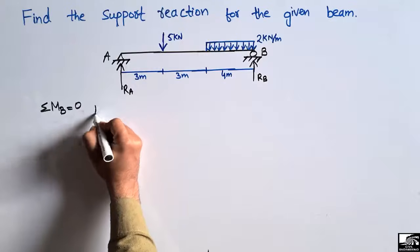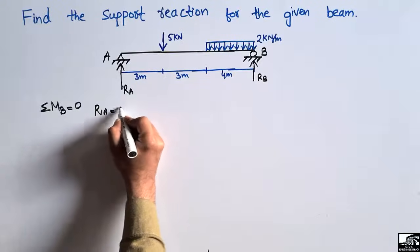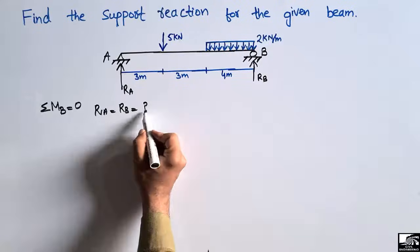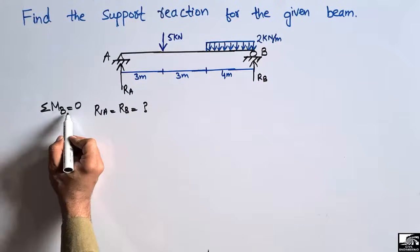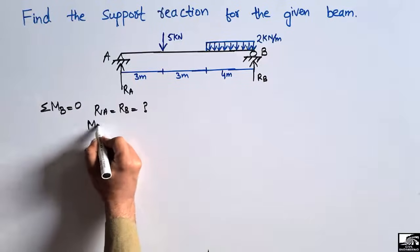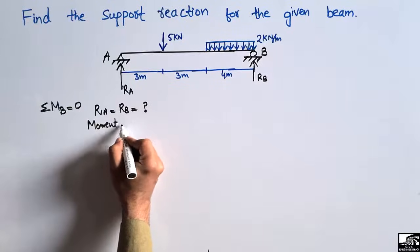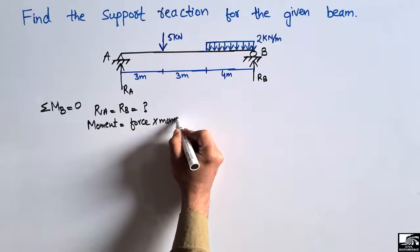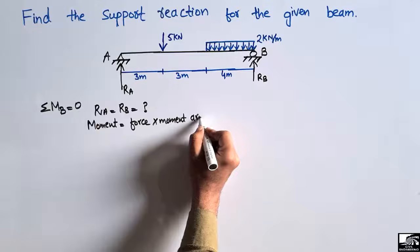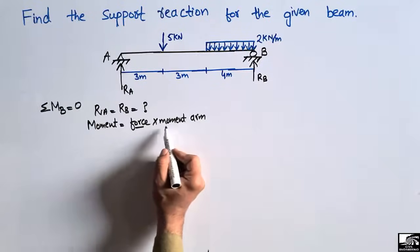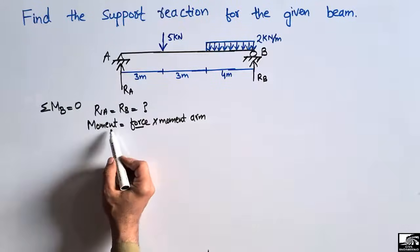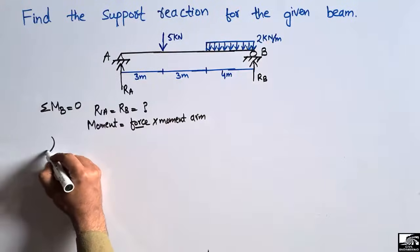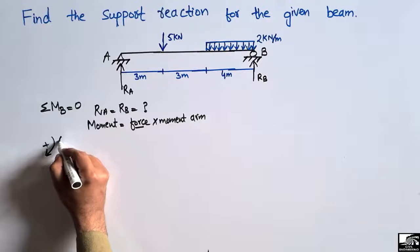RA and RB are the unknowns we need to find. The moment formula is: moment equals force multiplied by the moment arm. We find the force, multiply by the moment arm, and obtain the moment. For the summation of moments at point B, clockwise moments are taken as positive and anti-clockwise moments are taken as negative.